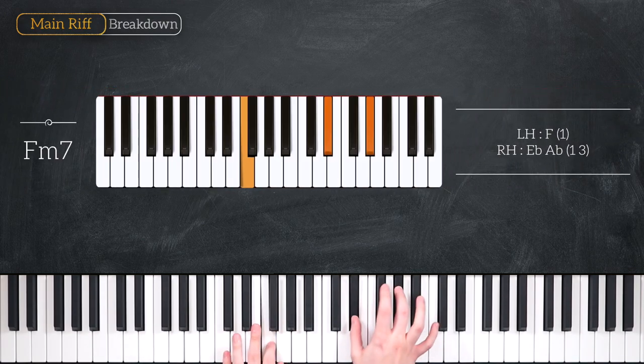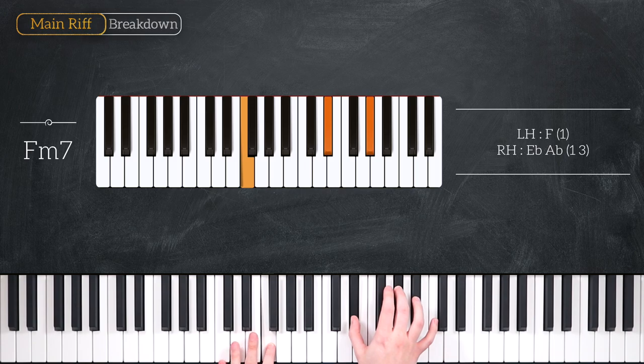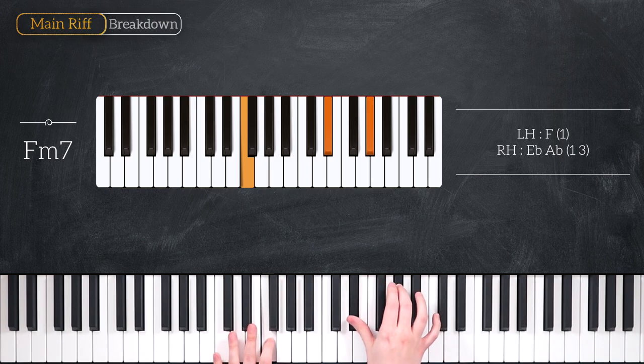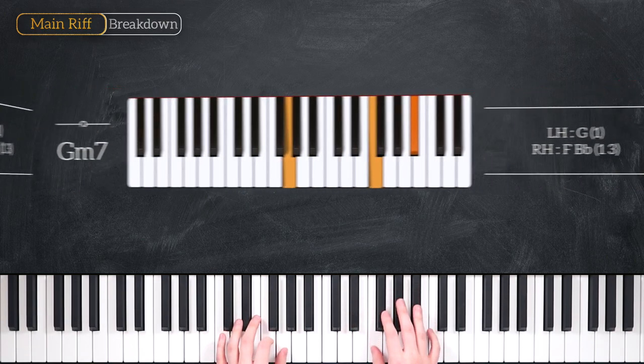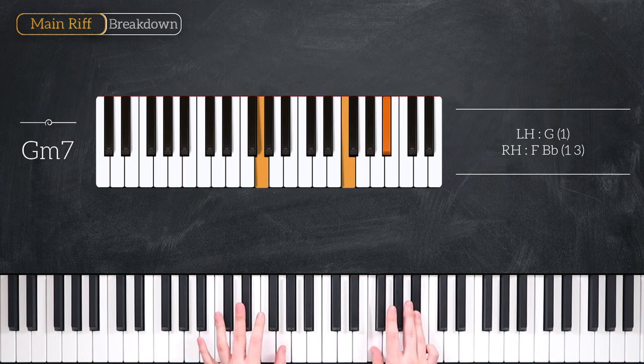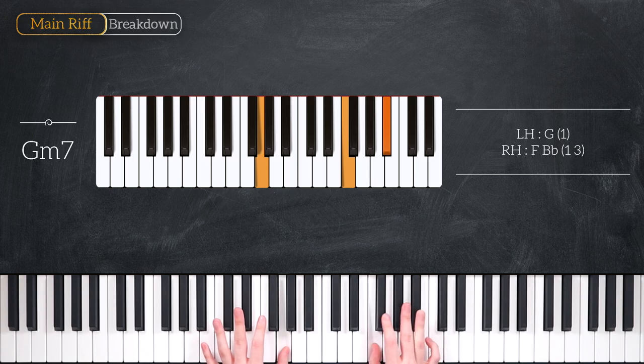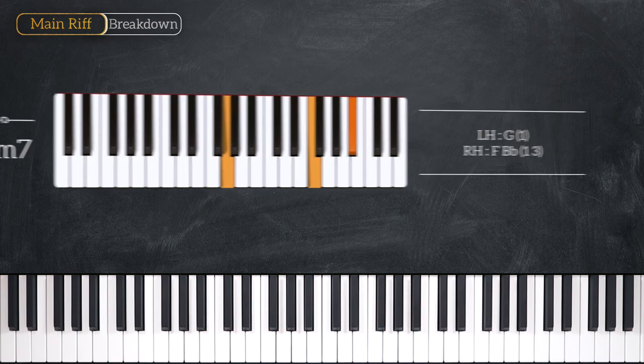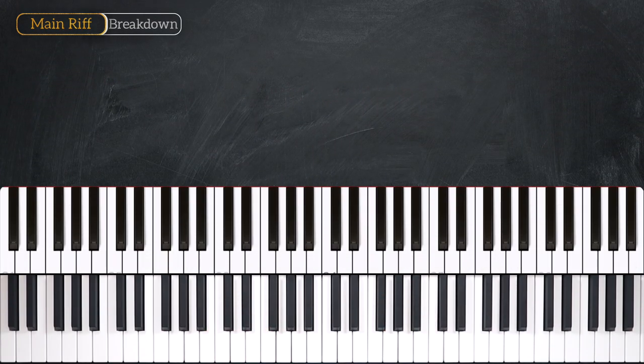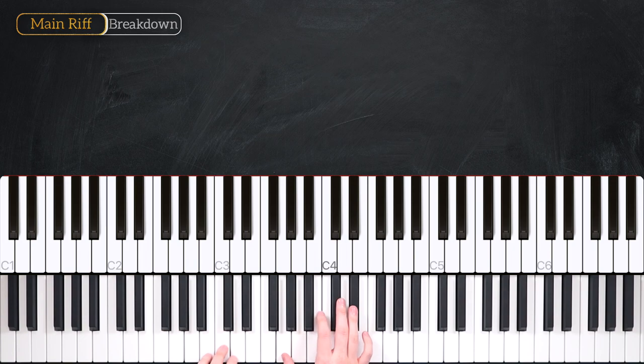Our second chord is going to be an F minor 7 chord. That's an F in the left hand, Eb and Ab in the right hand. And lastly we're going to have a G minor chord. Let's recap that one more time. We've got our C minor moving to our F minor 7.